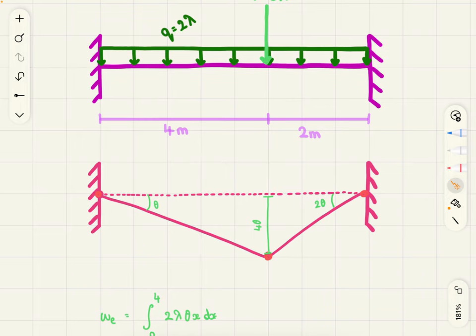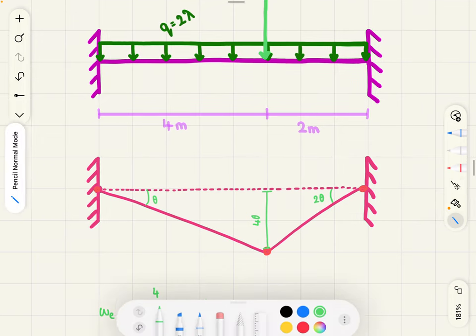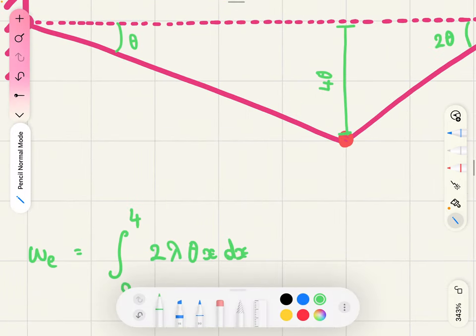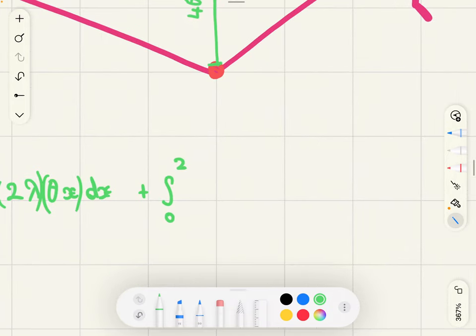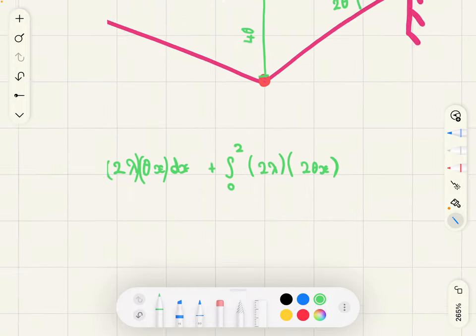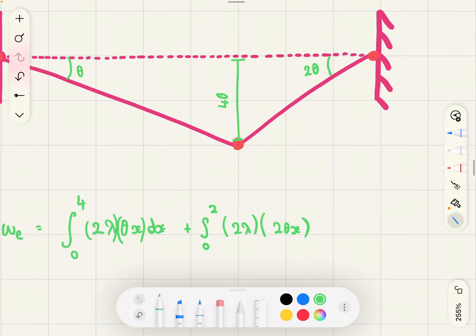Because we're not using the whole length x, so let me write this with brackets. And then, we also need to integrate from 0 to 2, so this side of 2 meters, 2 lambda, so the load, by 2 theta x, because this time our angle is 2 theta, with respect to dx.